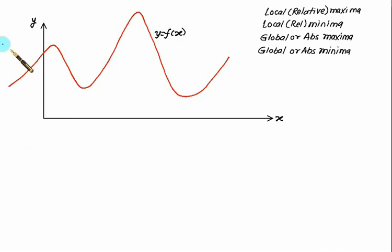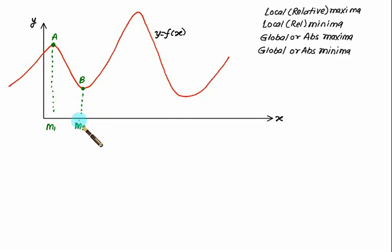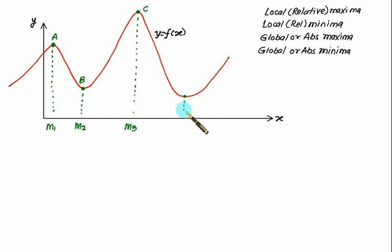These are stationary points. Let's say this first point is m1, corresponding to point a. We have another stationary point m2 corresponding to point b. There is a peak point c with corresponding stationary point m3, and point d with corresponding stationary point m4.